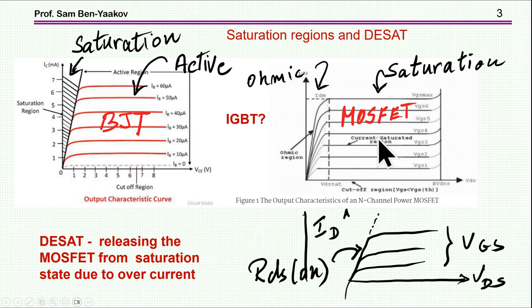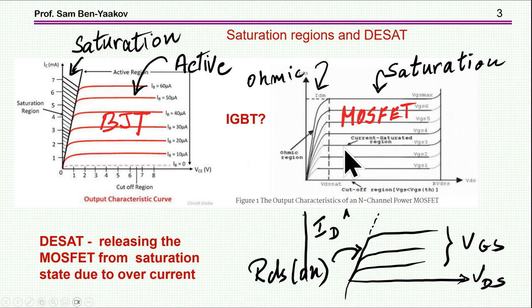There's some confusion here because this region is called saturation for the BJT, and a different region is called saturation for the MOSFET. What about IGBT? Well, IGBT somehow got stuck with the BJT arrangement where this region is called saturation. D-SAT means that we are going to de-saturate — that is, to remove the saturation caused by a high current. The concept is that we have a high current, locked to a high-current state, and we're going to remove this saturation. This is the protection scheme discussed in this presentation.